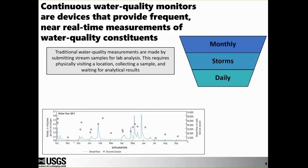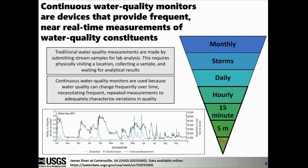A graph showing a time series of stream flow in blue, with pink dots representing nitrate concentrations from discrete lab samples, illustrates the sparse record that traditional measurements produce. Continuous monitors allow us to fill this record out much more completely. Using an instrument that measures nitrate every 5 or 15 minutes, you can see a lot more of the dynamics — you lose a lot of the variability without a monitor in stream.